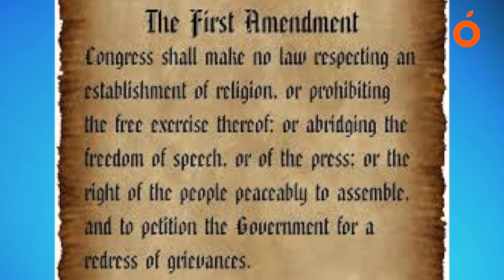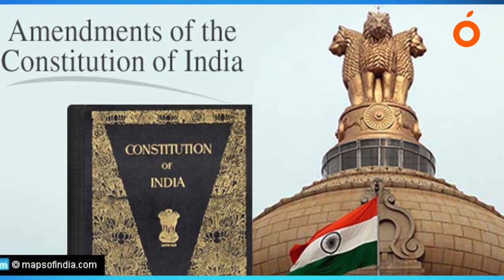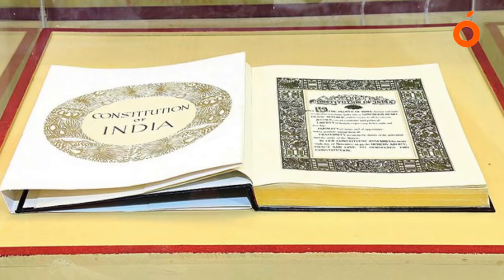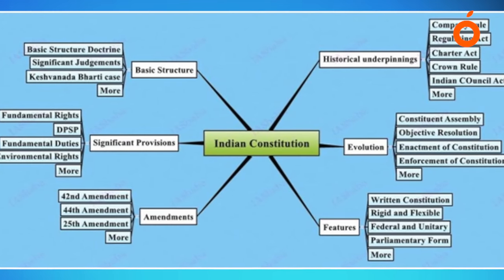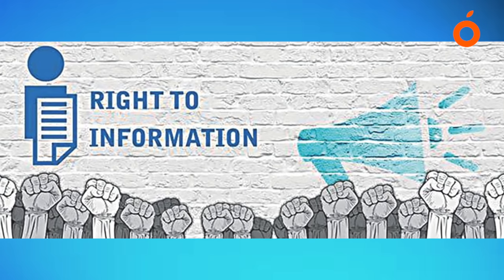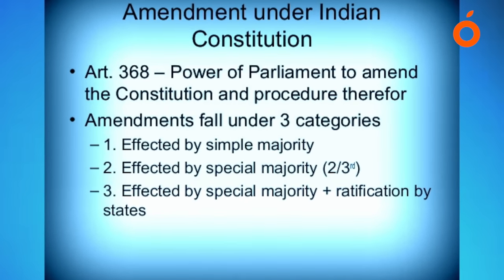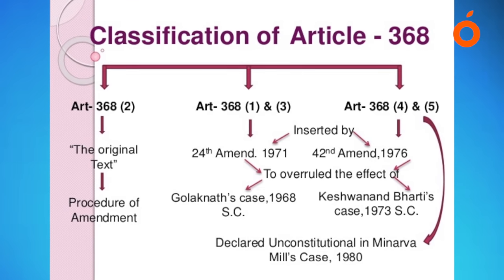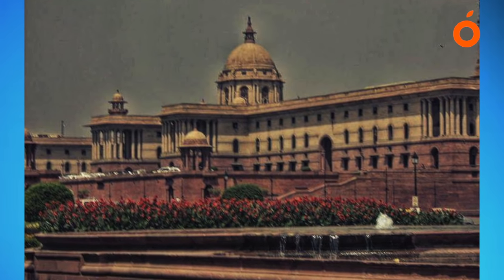Article 368 provides for two types of amendments: by a special majority of parliament, and through the ratification of half of the states by a simple majority. However, some other articles provide for amendment of certain provisions by a simple majority of parliament, similar to ordinary legislative processes. These amendments are not deemed to be amendments of the constitution for the purposes of Article 368. The constitution can be amended in three ways: by simple majority, by special majority, and by special majority with ratification of at least half of the state legislatures.